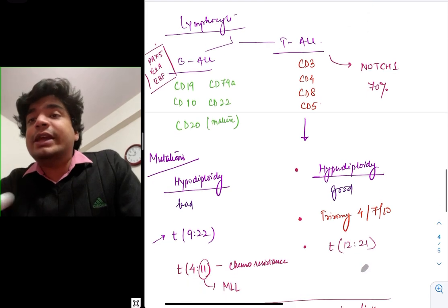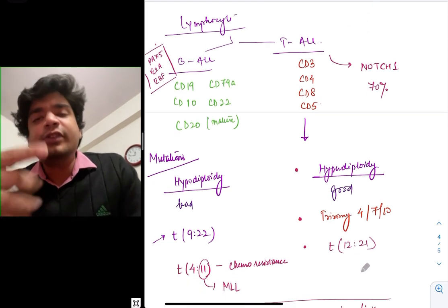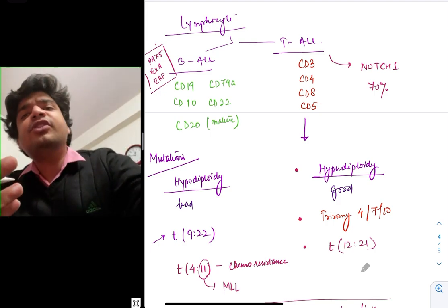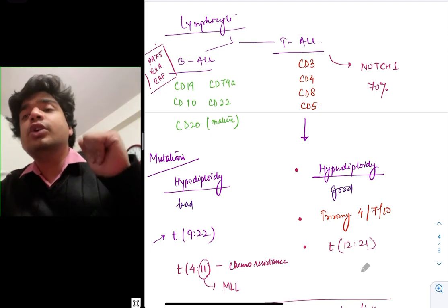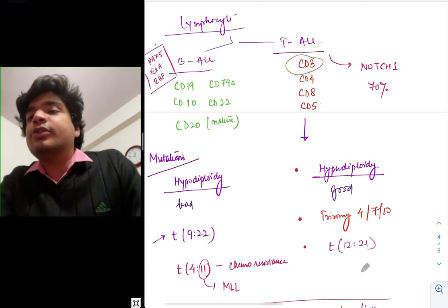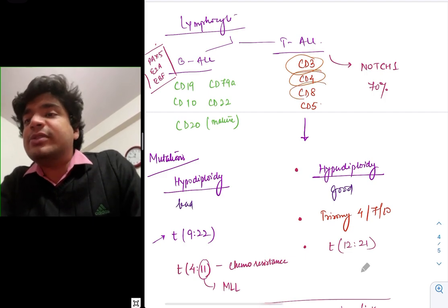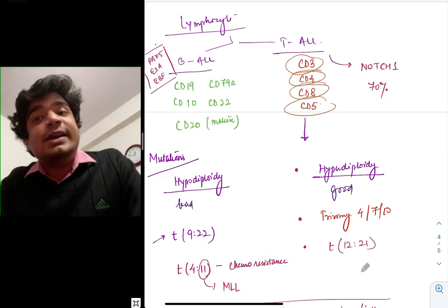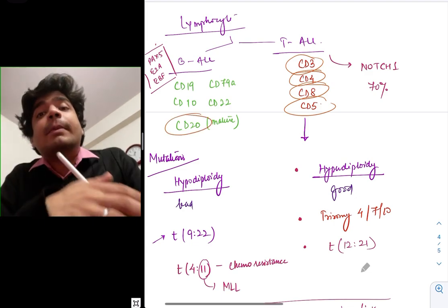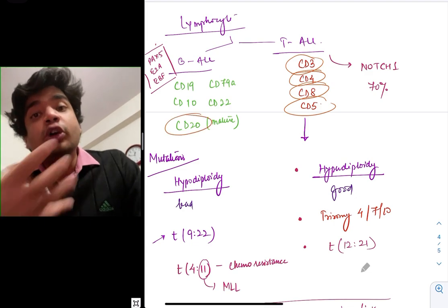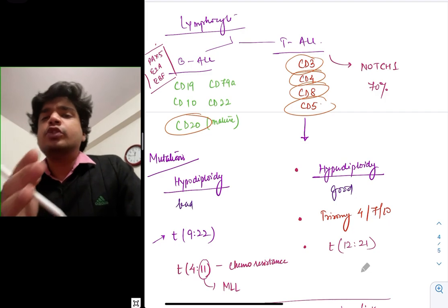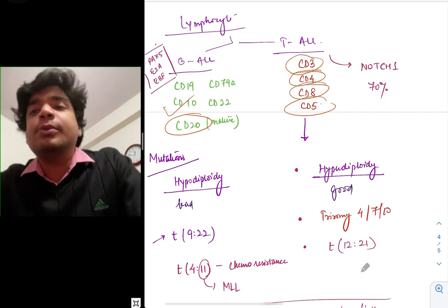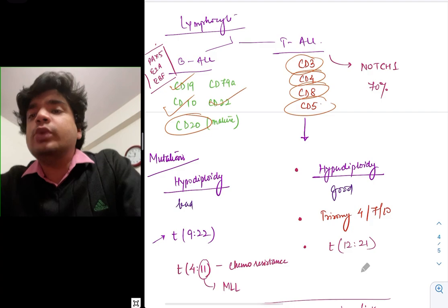CD markers are used to differentiate B-cell and T-cell ALL. T-ALL will be CD3 positive; it can be CD4 positive, CD8 positive, CD5 positive. B-ALL: if mature, CD20 positive; if immature, CD20 negative but CD10 positive, CD19 positive, CD22 positive.